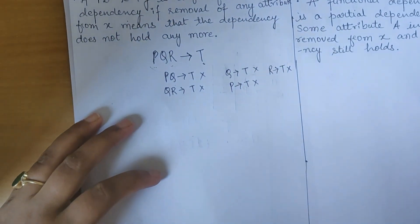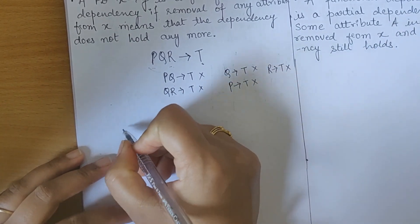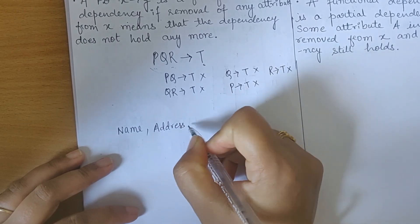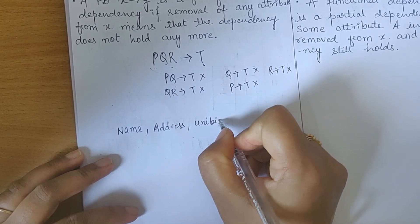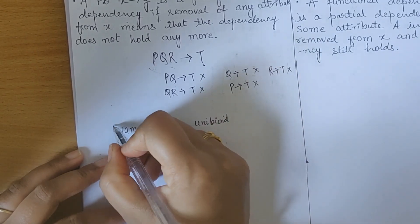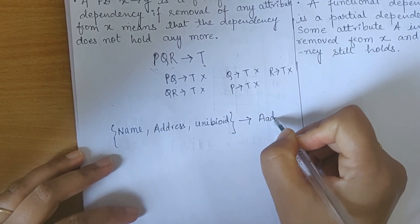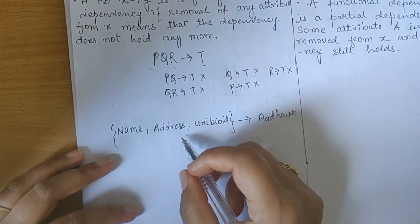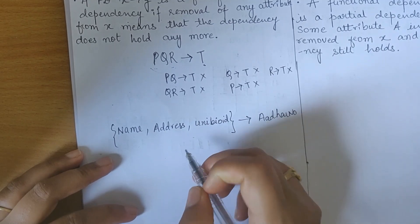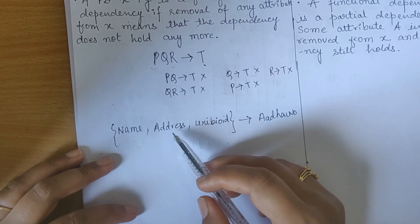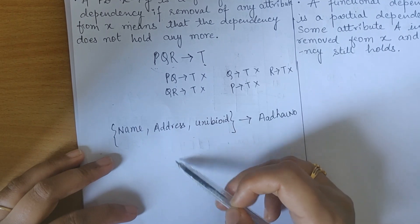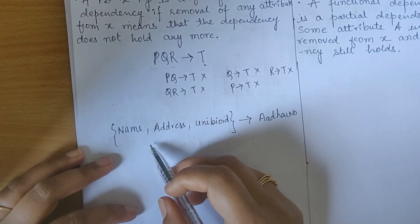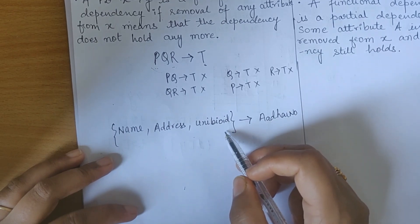Now understand with a real-world example. For an Aadhaar card, I need a person's name, a person's address, and a unique biometric ID. So I need these three things to give an Aadhaar number to a person. Now if a person comes with only their name and says 'give me an Aadhaar number,' we are not supposed to give it. If there is only an address, or address and unique ID but we don't know the name, we also cannot give the Aadhaar number.